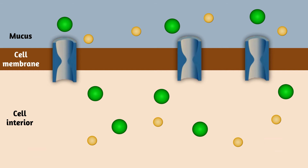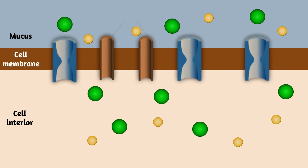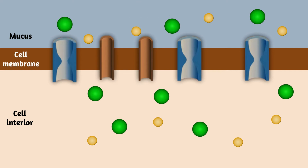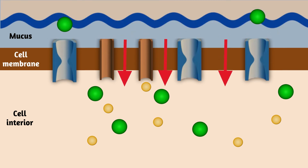This mutated CFTR is also responsible for the increased activity of another ion channel called epithelial sodium channel, ENAC. This causes the entry of sodium ions into the cell. All these processes result in a high concentration of ions inside compared to outside the cell. This then causes movement of water inside the cell via osmosis, causing a thickened mucus on the outside clogging a range of microbes.